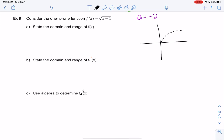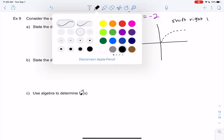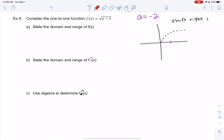Right, square root of x looks like this, and then we're just going to shift to the right one. Remember, x's are opposite. So we'll start at one, and we'll shift. Right, and it's one-to-one. It passes that horizontal line test.